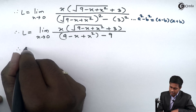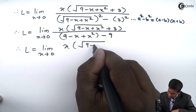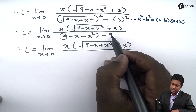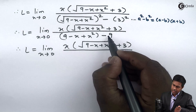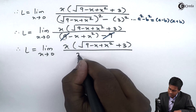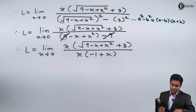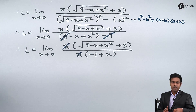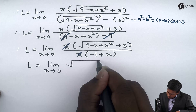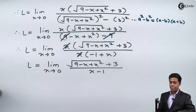Simplifying, we get L as the limit x tends to 0 of x times (square root of 9 minus x plus x squared plus 3), upon the denominator where the minus 9 and plus 9 cancel. From the remaining terms we can take x common, giving (minus 1 plus x) in the bracket. This x in the denominator cancels with the x in the numerator, leaving L as the limit x tends to 0 of (square root of 9 minus x plus x squared plus 3) upon (x minus 1).